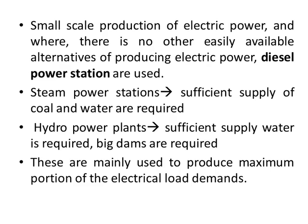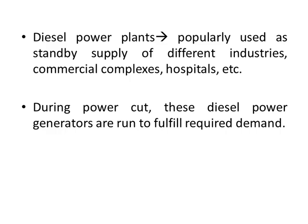Steam power plants and hydro power plants are mainly used to produce the maximum portion of our electrical demand. For a steam power plant we require an ample amount of coal, and for a hydro power plant we require water after the construction of dams. For diesel power stations there is no such requirement — we can install them anywhere, so there is no site selection problem. They are popularly used as standby for industries, commercial complexes, hospitals, and during power cuts to fulfill electricity demand.